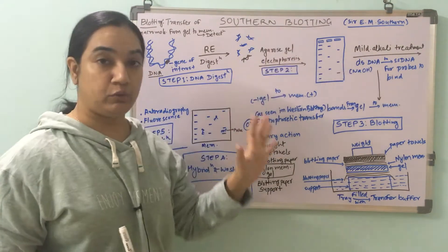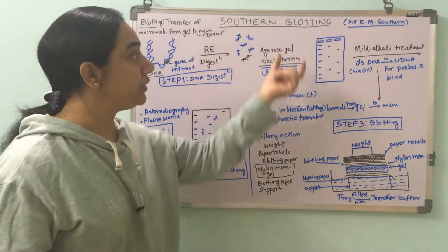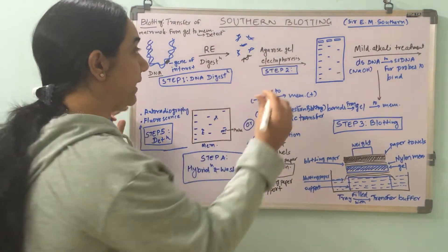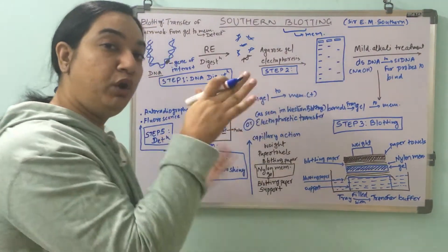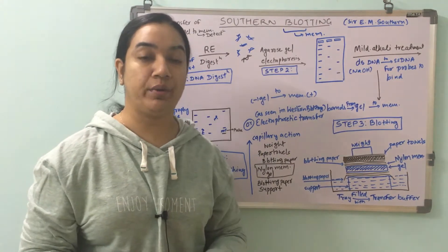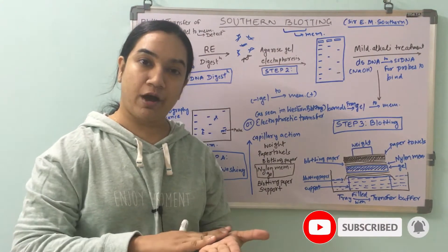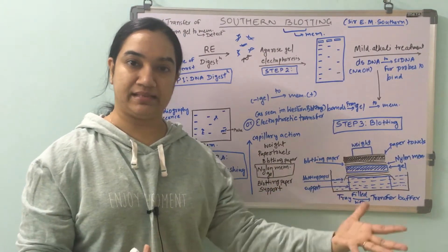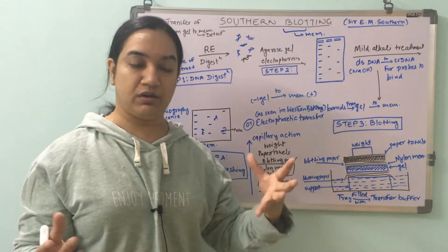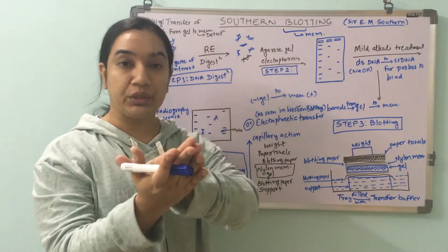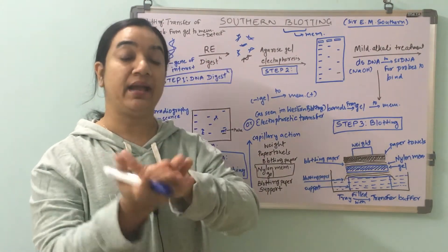First we'll understand the word blot and blotting. In case you are watching this video first, the meaning of blot — blot is referred to as the membrane on which we are going to blot the bands that we get. I gave an analogy in the last video: when we were kids we used to blot images from an already existing image with butter paper, or put oil on a paper and trace the image. Something similar — we have a gel and we are going to transfer the band from the gel to the membrane, which is called the blot.